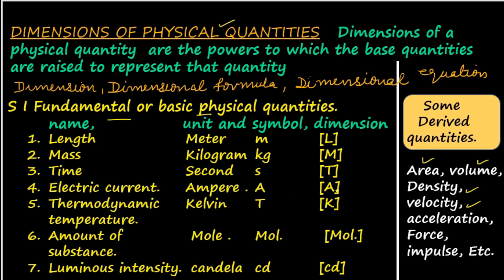Electric current is represented as A within square brackets. Thermodynamic temperature as K within square brackets. Amount of substance as Mol within square brackets. Luminous intensity as CD within square brackets. What really is this dimension?